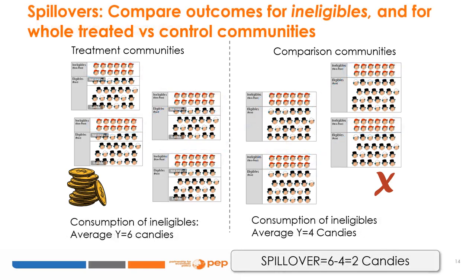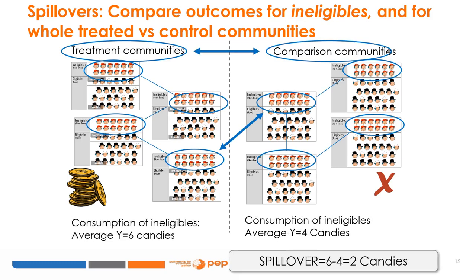How do we compute spillovers? We want to test whether the program had an effect over and beyond enrolled or direct beneficiaries. For that, we need to check the outcomes for ineligible individuals and for the whole population in comparison communities. We compare outcomes for ineligible individuals in treatment and comparison communities. The intuition is that in comparison communities, ineligible individuals will by definition not benefit at all from the program. However, in treatment communities, if eligible individuals spend their money within the community or hire workers, they might benefit ineligible individuals in the treatment communities. The right control group will be the randomly assigned comparison communities, looking at ineligible individuals in them, who are non-poor and therefore similar to those not directly benefited in treatment communities.